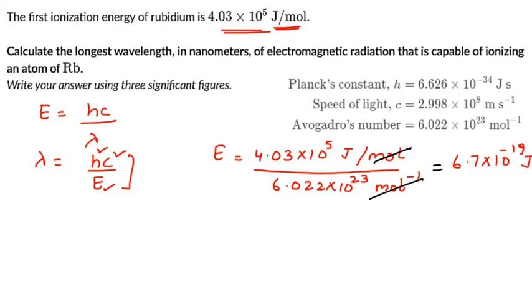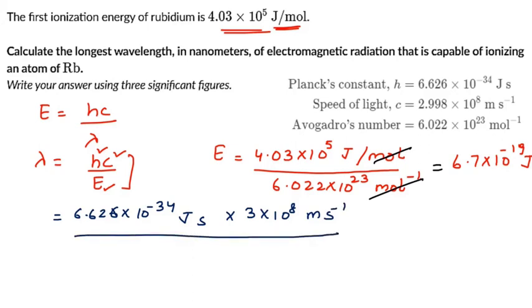Now we'll substitute this value into the formula for lambda. We have h = 6.626 × 10^-34 joules·second multiplied by 3 × 10^8 meters per second, divided by 6.7 × 10^-19 joules.